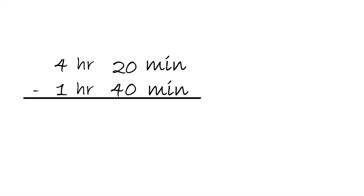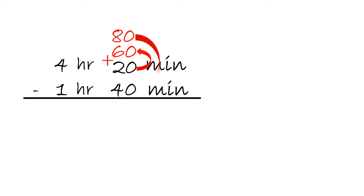However, here we have 4 hours and 20 minutes minus 1 hour and 40 minutes. The problem here is we cannot subtract a smaller number from a bigger number — 20 minus 40, we cannot do that. What we have to do is add 60 minutes, so we take 20 plus 60, and the answer will be 80. Then 80 minus 40 will equal 40 minutes.